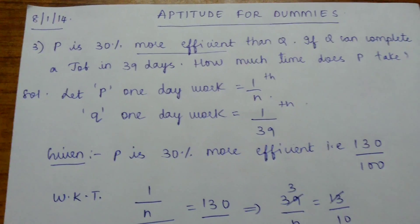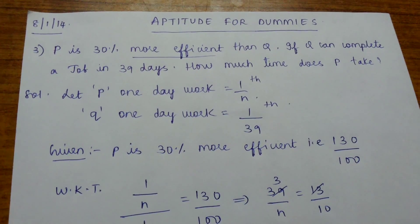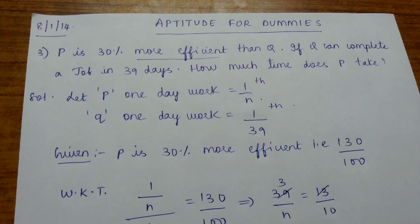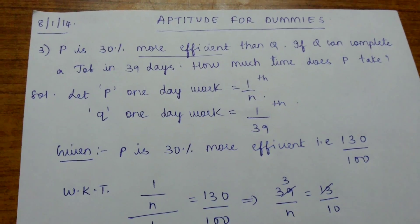Now another problem. P is 30% more efficient than Q. If Q can complete a job in 39 days, how much time does P take?